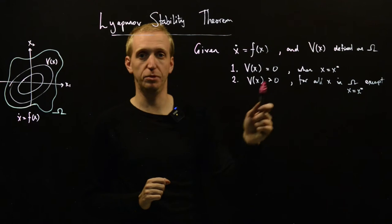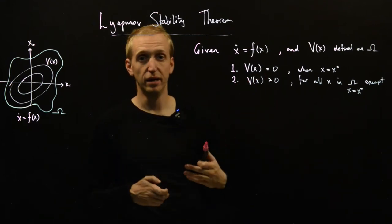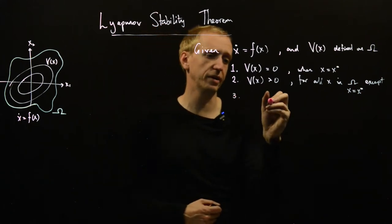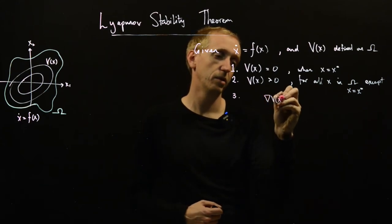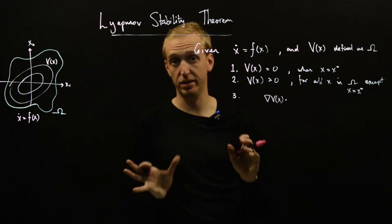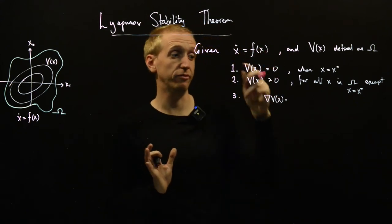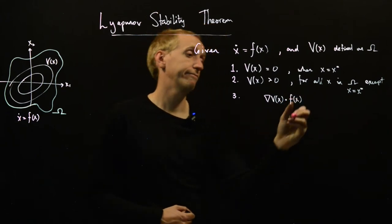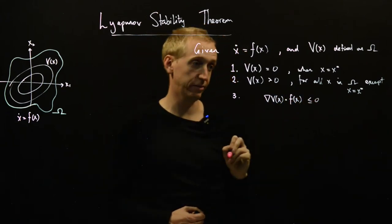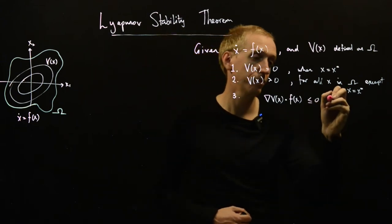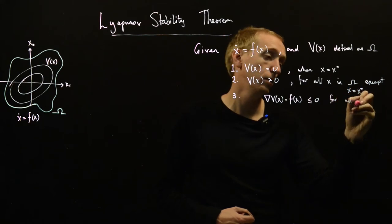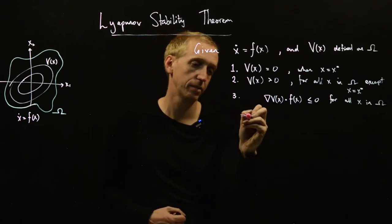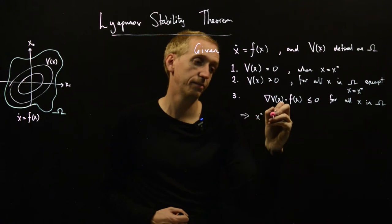The second condition is that the value of our Lyapunov function is larger than 0. And this is for all x in omega except x is equal to x star. So we've said that at x star the value is equal to 0. It needs to be bigger than 0 everywhere else in our region omega, which must also include our equilibrium point. So these are our sort of two basic properties for Lyapunov function that we saw last time. And then we argued that if something involving the gradient of v when we take the dot product with x dot.